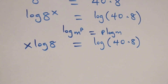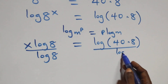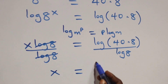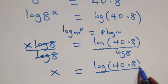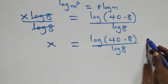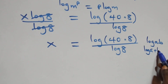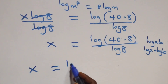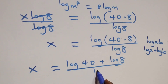The next step: divide both sides by log 8 — divide this side by log 8 and also divide the other side by log 8. The log 8 terms cancel, giving us x equals log(40 times 8) over log 8. This follows the rule that log(a times b) can be written as log a plus log b, so x equals log 40 plus log 8, all over log 8.